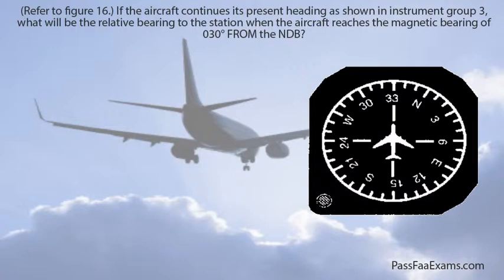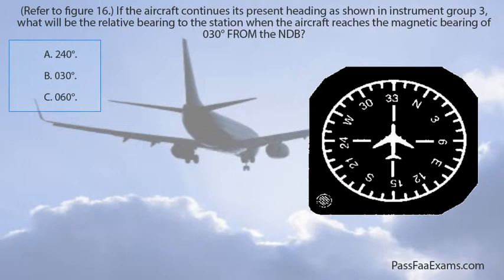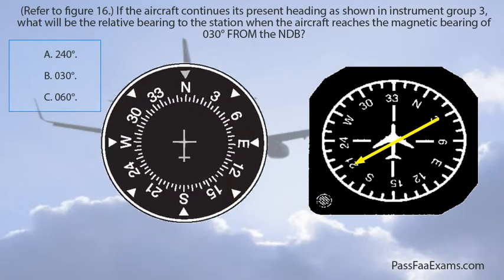For the sake of the test, let's answer the question. The possible answers are 240, 030, and 060. If we convert Figure 16 into an RMI by placing the needle's tail on 030 — because that is the magnetic bearing from the station that the question talks about — we then draw out a fixed-card ADF and transfer the needle from the RMI to the fixed-card ADF, as shown in the animation.